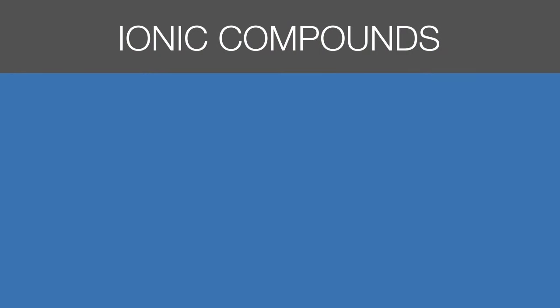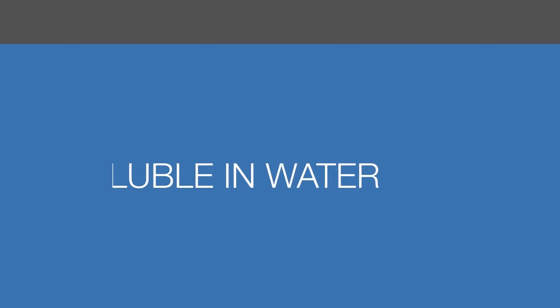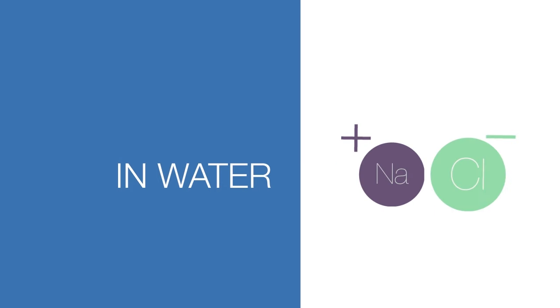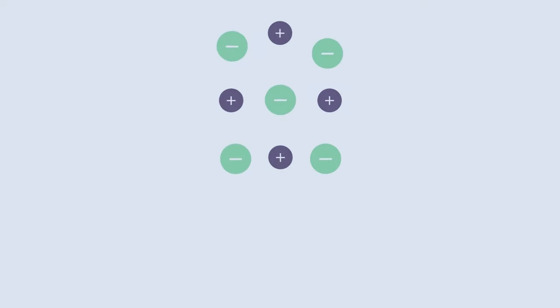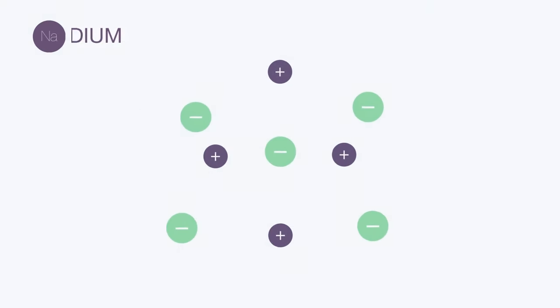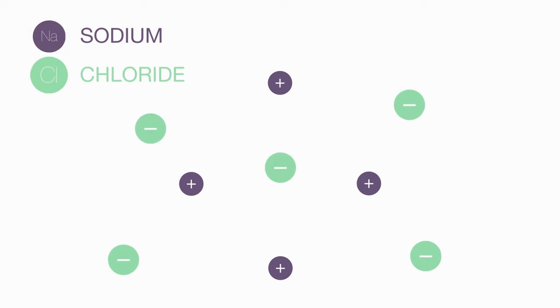Most ionic compounds are soluble in water. In water, an ionic compound can dissociate into its ions. So when we dissolve sodium chloride, it will dissociate into sodium and chloride ions.